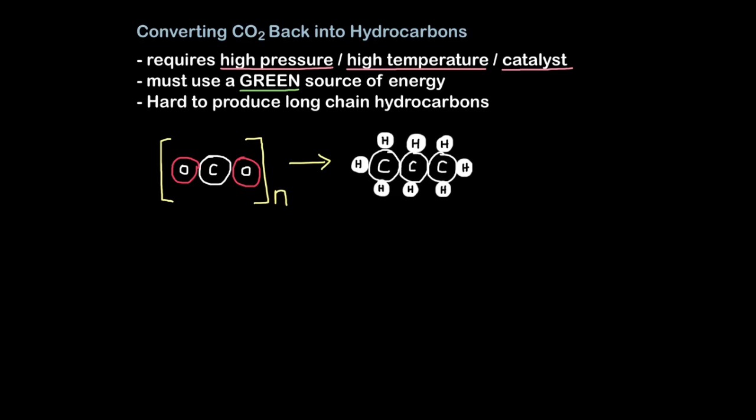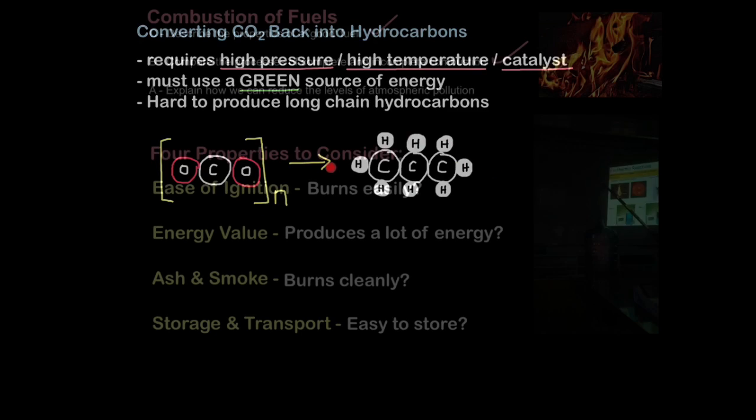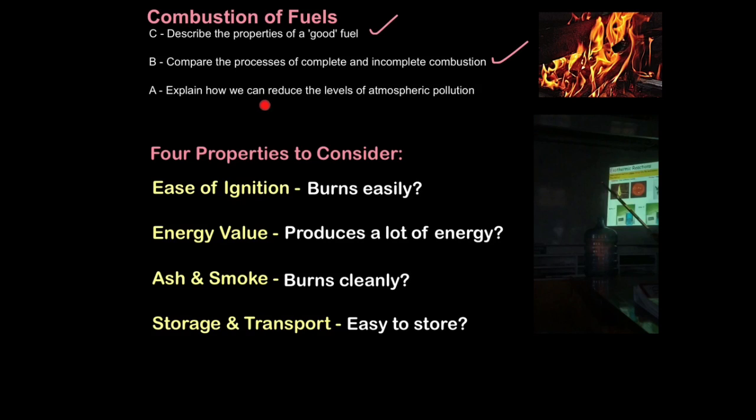It's also very hard to produce long-chain hydrocarbons like petrol, which we use frequently. So this certainly has a limited use. Here you can see I've just shown a molecule of carbon dioxide, and what we're doing is turning it back into hydrocarbons. And that's how we can explain how to reduce the levels of atmospheric pollution.